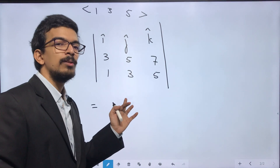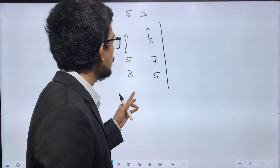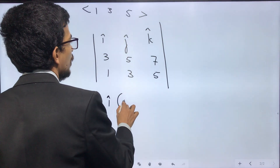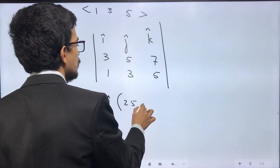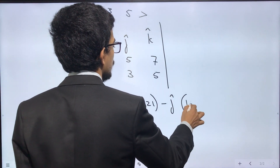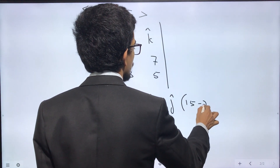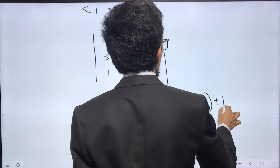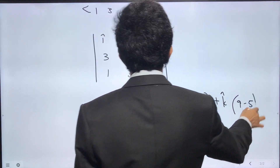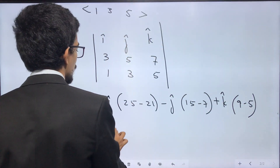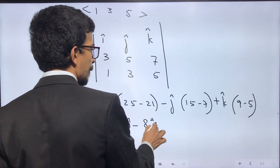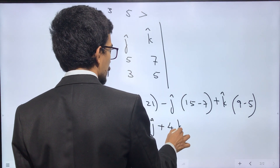Now, if you want to expand it, you can see: i into (25 minus 21) minus j into (15 minus 7) plus k into (9 minus 5). So, 4i minus 8j plus 4k.